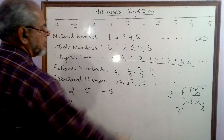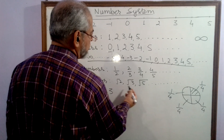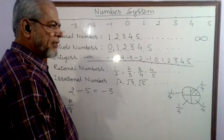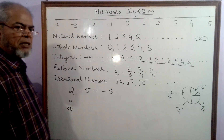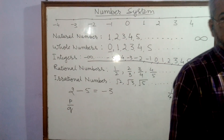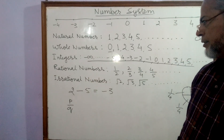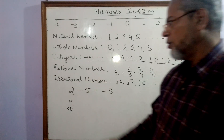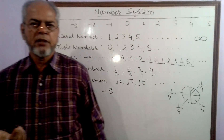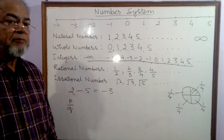There is one more type of number. Suppose √2, √3, √5, and so on — these are numbers which cannot be expressed in the form p upon q where p and q are integers and q is not zero. Such numbers are known as irrational numbers. All those numbers which cannot be expressed as rational numbers are irrational numbers.